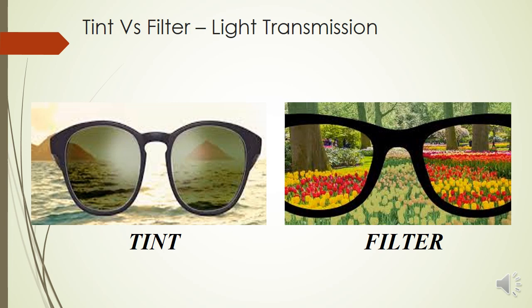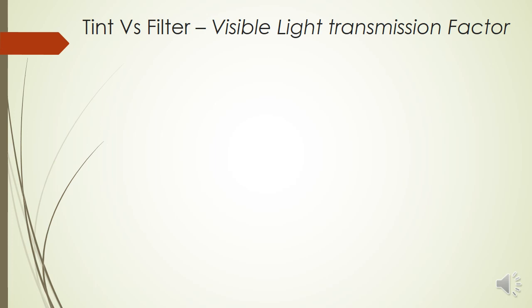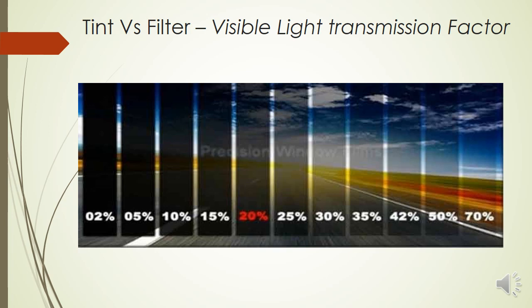The second differentiating factor is the visible light transmission (VLT). A filter does not reduce the amount of light being transmitted, so there is no VLT reduction in filters. In a tint, it depends on how much tint is applied — a lighter tint allows around 70% of light to be transmitted, but as you increase the tint, it reduces the intensity of light reaching the eye.